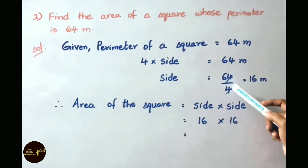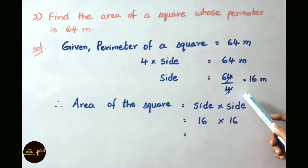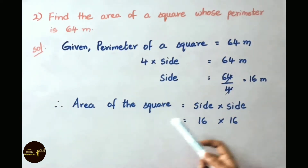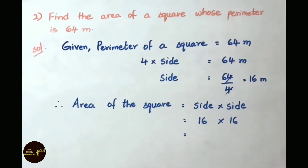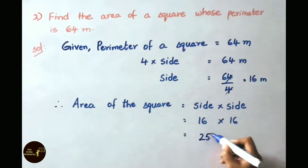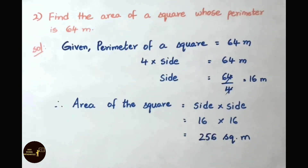Side equals 64 divided by 4, which equals 16. Therefore, side of the square is 16 m. Now let us find area of the square. We know the formula: side into side. That equals 16 into 16, which gives 256 square meters. Therefore, area of the given square is 256 square meters.